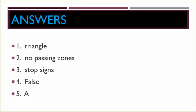Number one is triangle, number two is no passing zones, number three is stop signs, number four is false, number five is A.